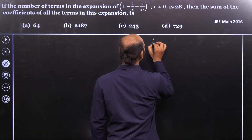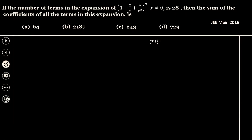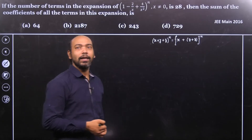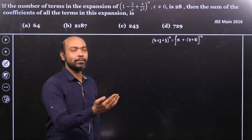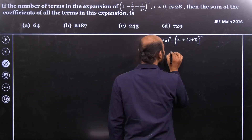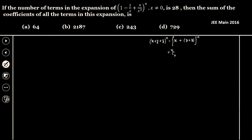Let's write down the expansion of x plus y plus z whole to the power n. We just convert it into a binomial form so we can expand it using the binomial theorem. That gives us nC0 times x to the power n, and y plus z whole to the power 0, and so on.